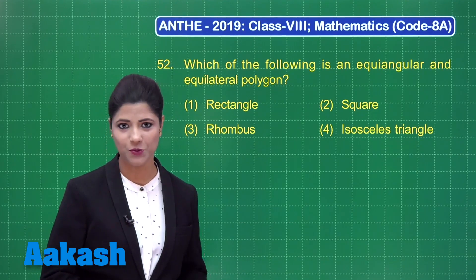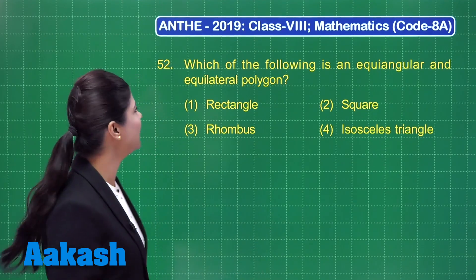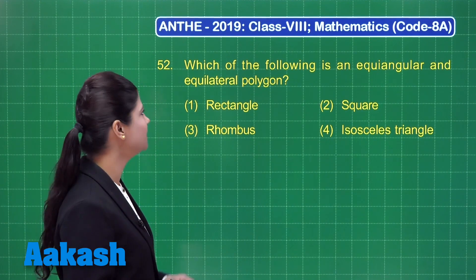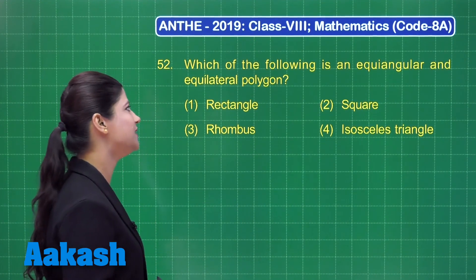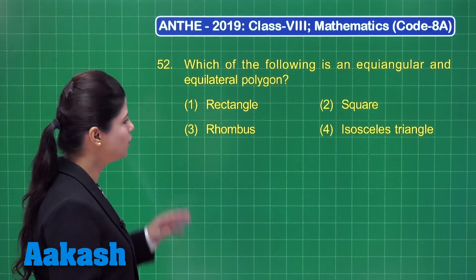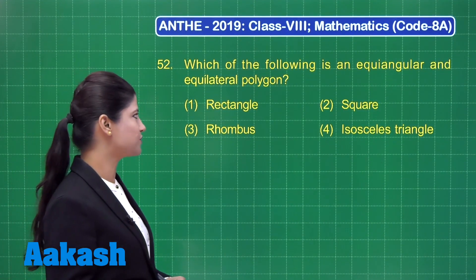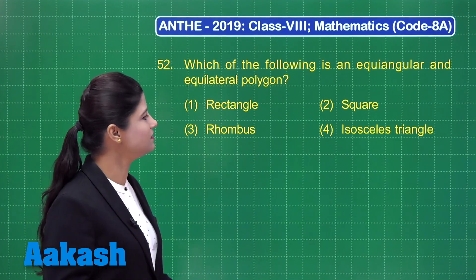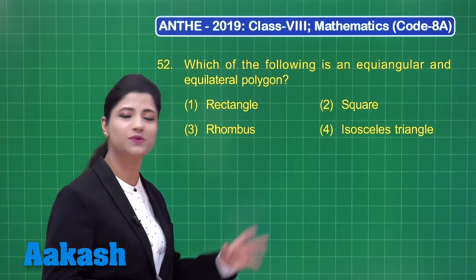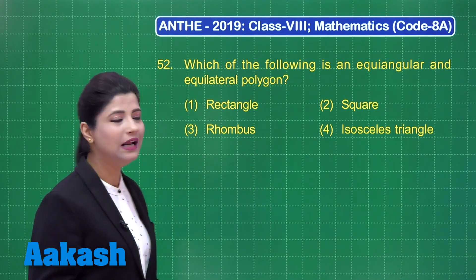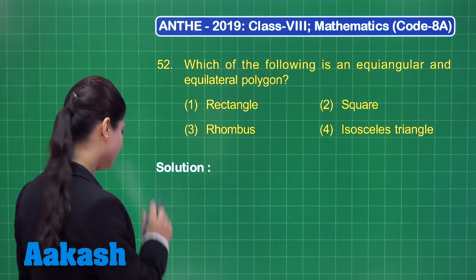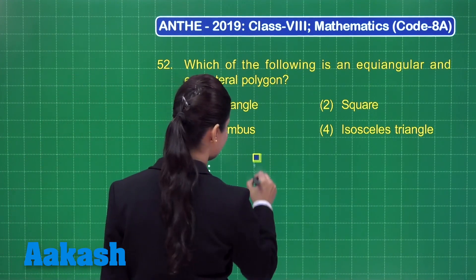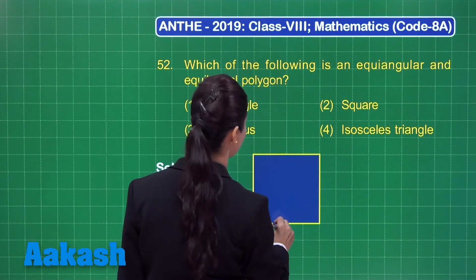Let us take up question number 52. It states: which of the following is an equiangular and equilateral polygon? We are given four options: rectangle, square, rhombus, and isosceles triangle. Let me tell you about this equiangular and equilateral polygon.